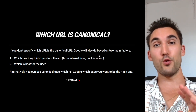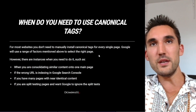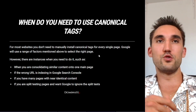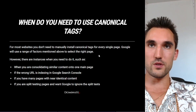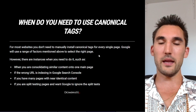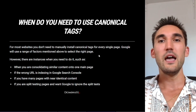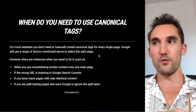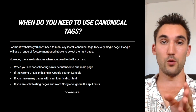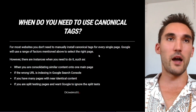You can use canonical tags to tell Google which page you want to be the main one. For most websites, you usually don't need to manually implement canonical tags for every single page — it's typically done pretty much automatically. As long as you've got all the redirects working correctly and you're always using one consistent instance of the URL, typically speaking you'll be fine.